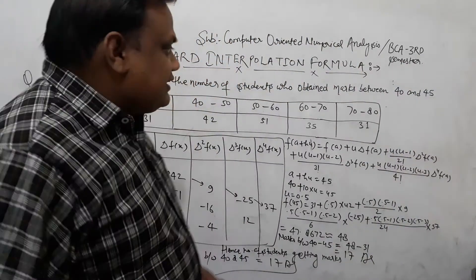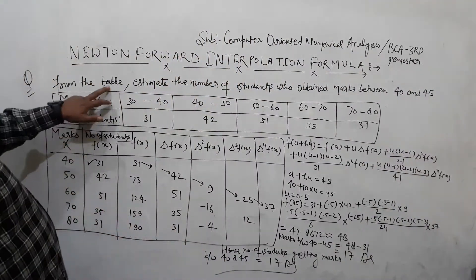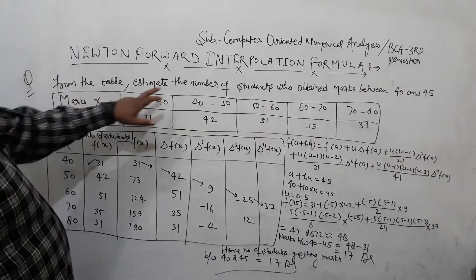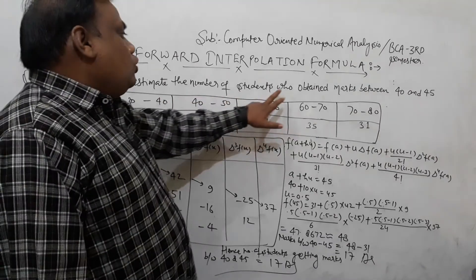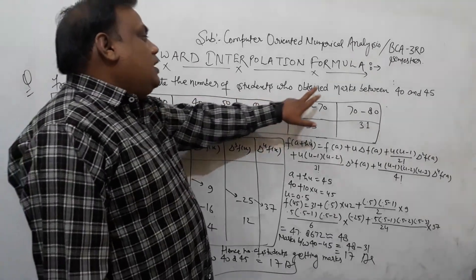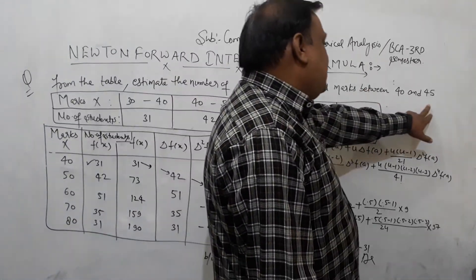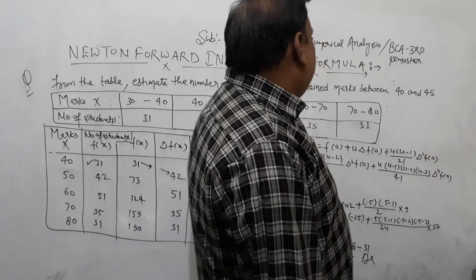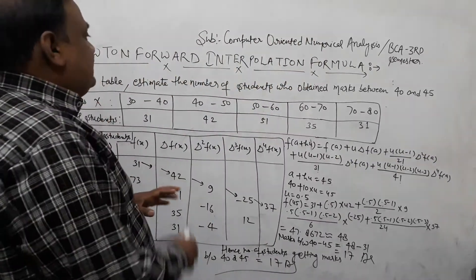The question from the table is: estimate the number of students who obtained marks between 40 and 45.